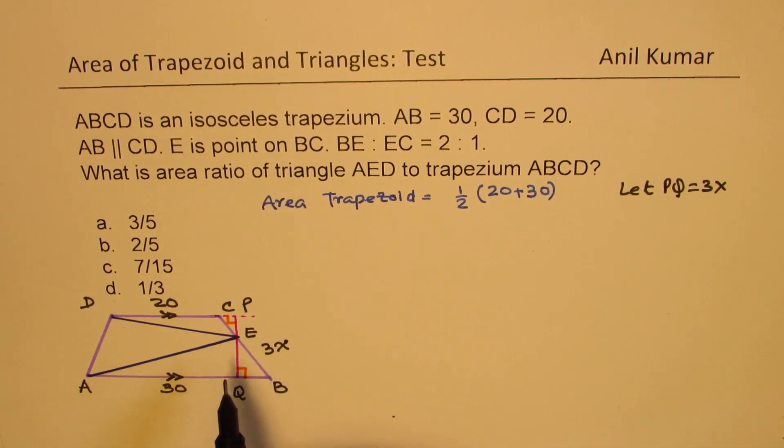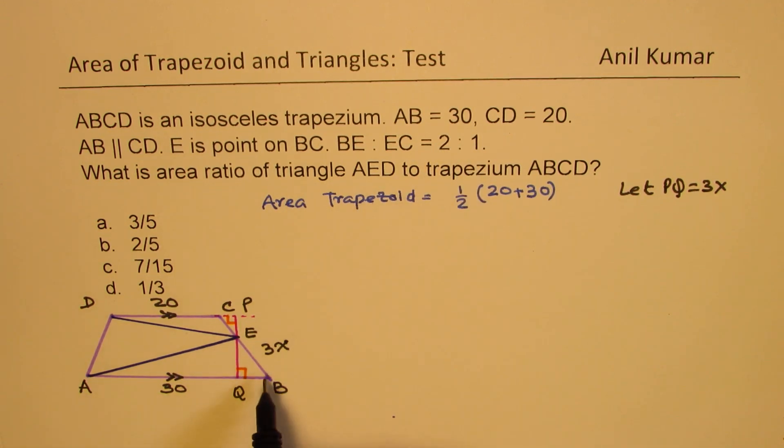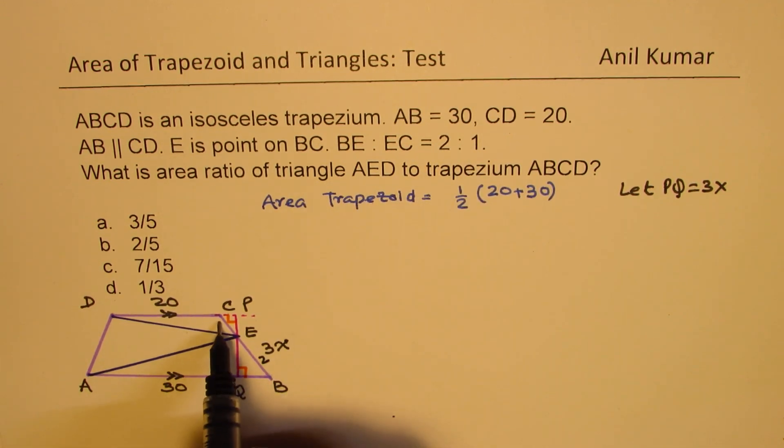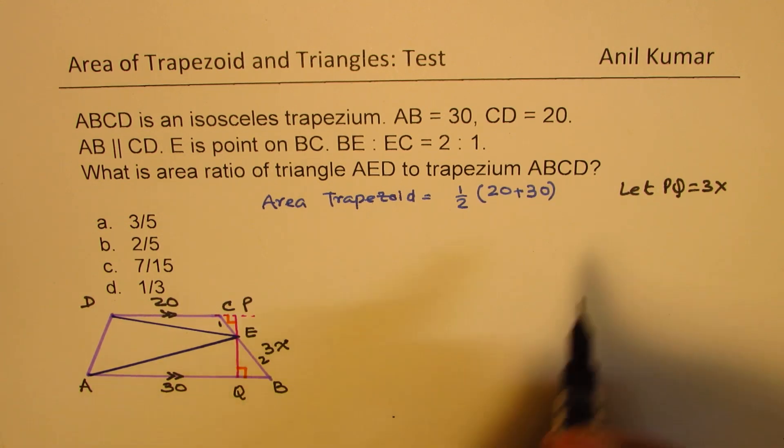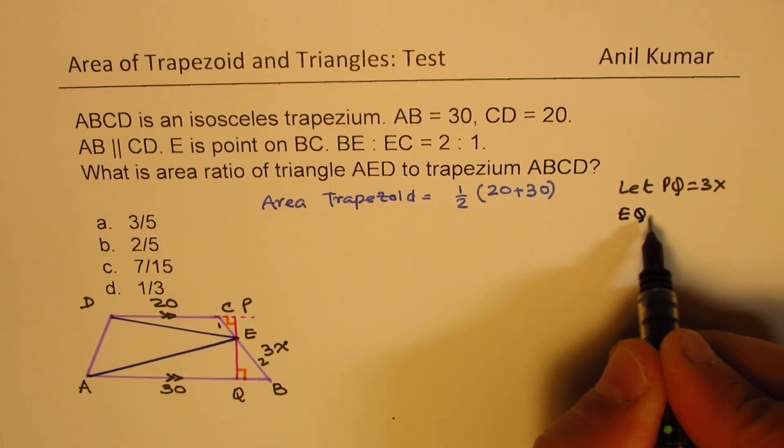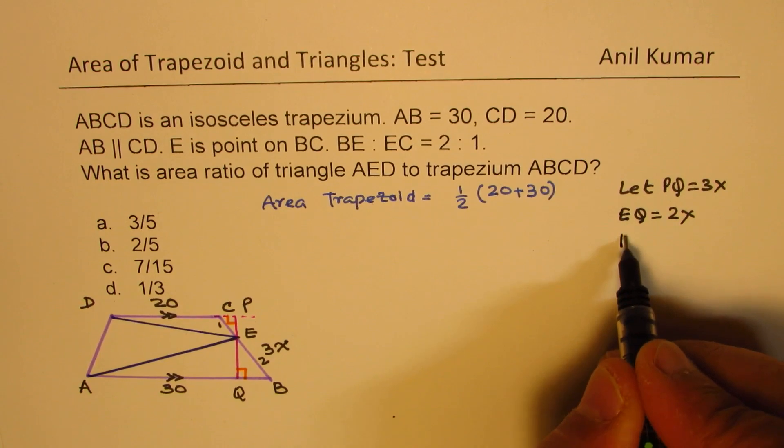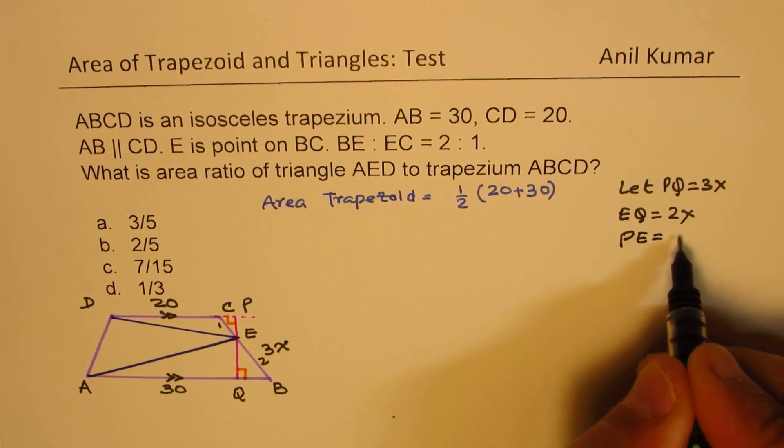In that case, since we know that the ratio of BE to EC is 2 is to 1, that is this ratio is 2 is to 1, these two are similar triangles. So we have side EQ as equal to 2X and PE equals to X.